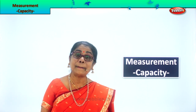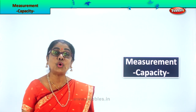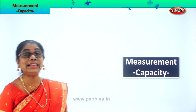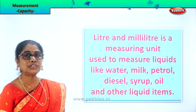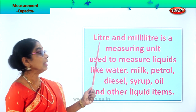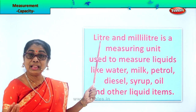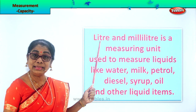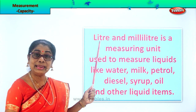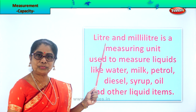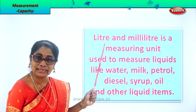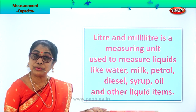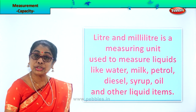It's very interesting because it's all what you already know, see and understand. In capacity, milk, water, and oil — anything that you buy in the market — you buy in liters. One liter can, five liter can, ten liter can and so on, whether it's petrol, water, or milk.